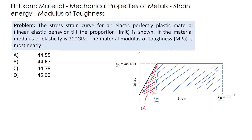We need to know the strain at the plastic limit. Before the proportional limit on the stress-strain curve, the relationship between stress and strain is linear, and the slope of this linear portion is the modulus of elasticity, which is 200 gigapascal. Hooke's Law expresses the relation between elastic modulus, stress, and strain: stress equals the modulus of elasticity multiplied by the strain.